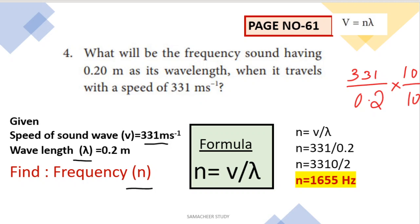The formula from page 61: velocity equals frequency multiplied by lambda, i.e., V = N × λ. Rearranging: N = V divided by lambda. Substituting: N = 331 divided by 0.2, which equals 1655 hertz. So the frequency of the sound wave is 1655 hertz.